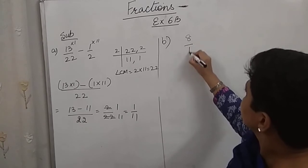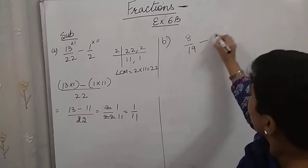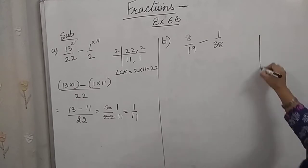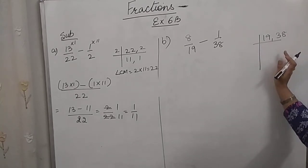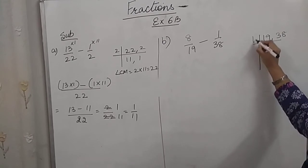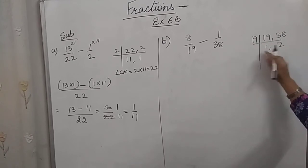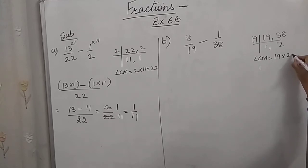So LCM of 19 and 38, we all know 38 comes in the table of 19. So 19 into 1, 19 into 2. LCM is 19 into 2, which is 38.